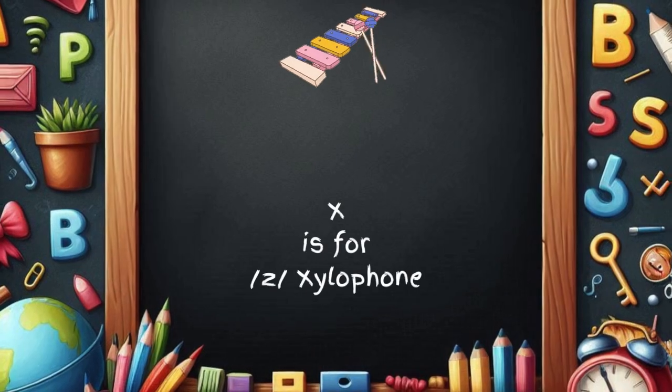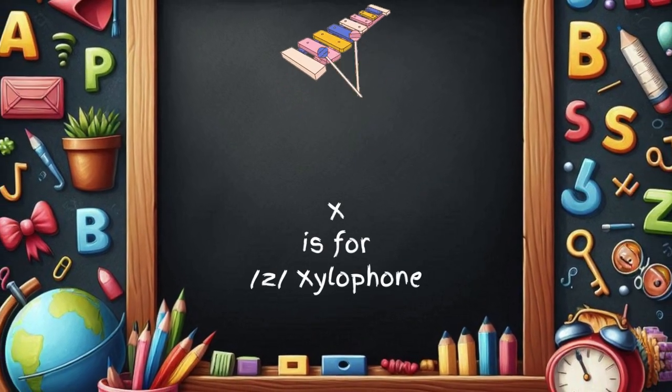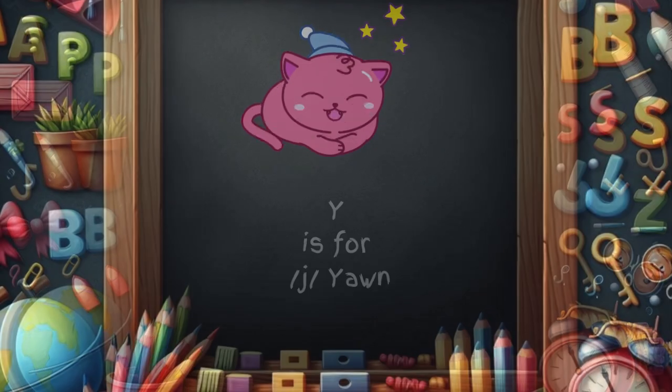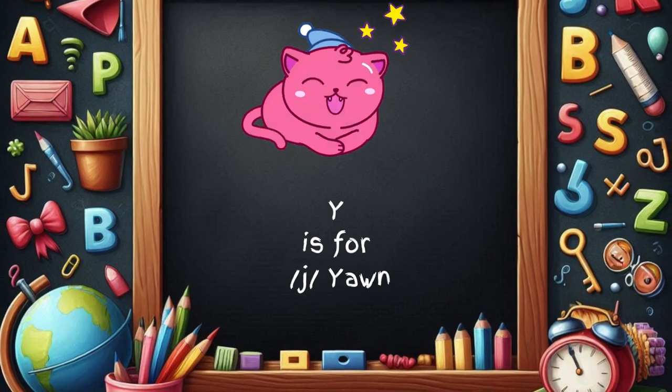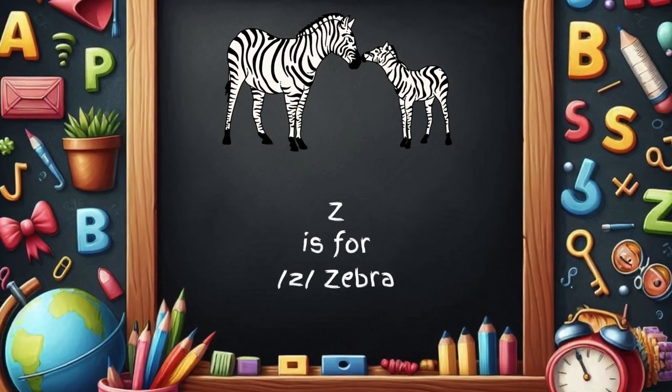X is for xylophone, x-x-xylophone. Y is for yo-yo, y-y-yo-yo. Z is for zebra, z-z-zebra.